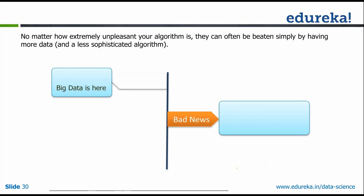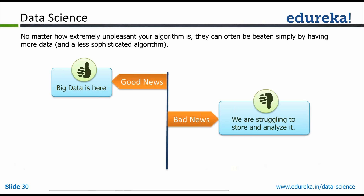As big data grows in terms of volume, variety, and velocity, the challenge is to create a big data solution that can facilitate data science. If you have lots of data, you need systems to store, manage, and analyze it. If you have something like Twitter, the data science challenge is how to do analysis in a very fast-paced manner. And if you have variety of data, the challenge is how to extract meaningful information from these diverse formats and then make some conclusions.